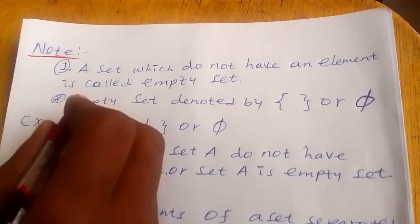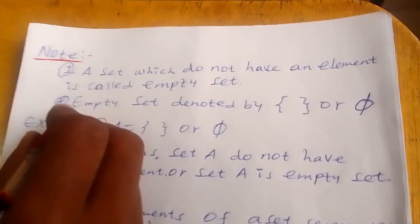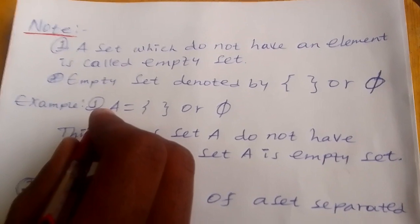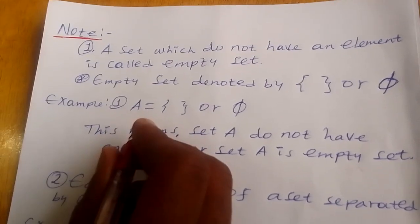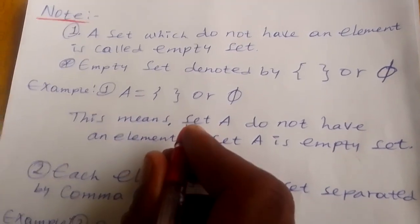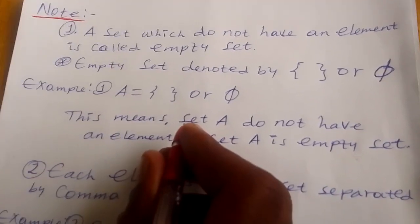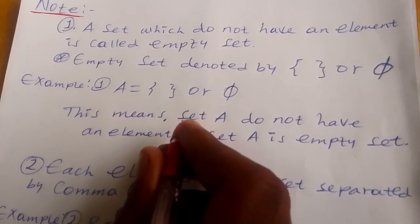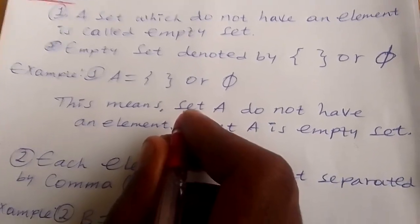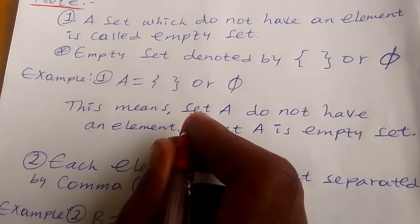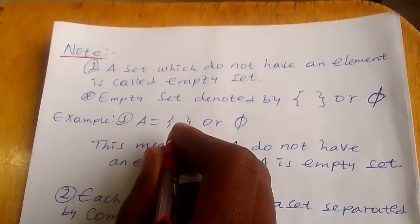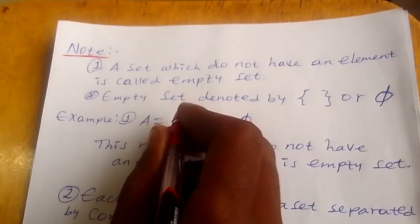Now, first — don't forget, the previous time we already have seen about what a set is: the definition of a set and the symbol we use to represent a set and its elements. Now let's go to the second part.